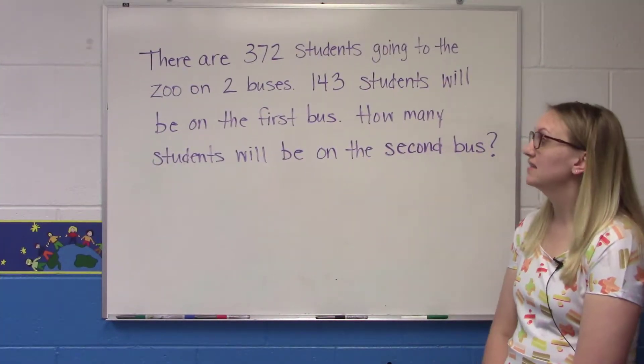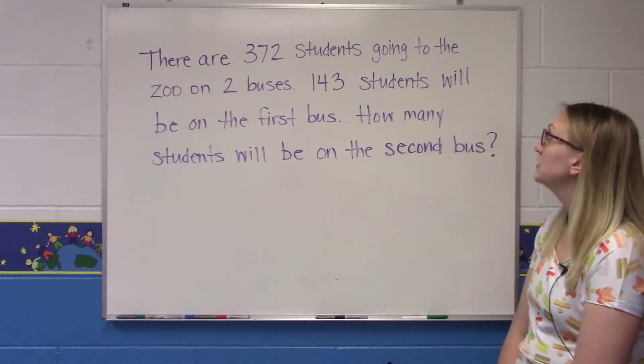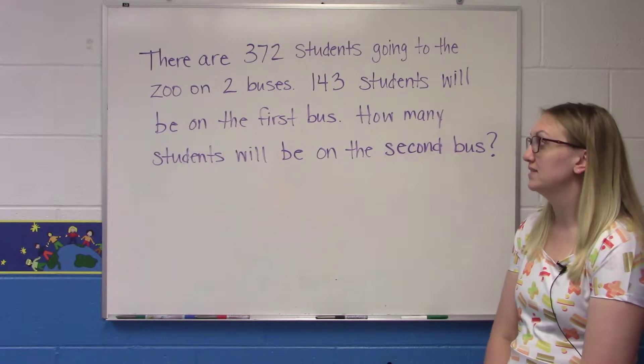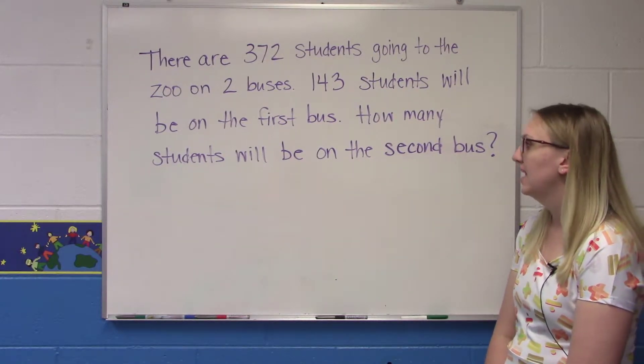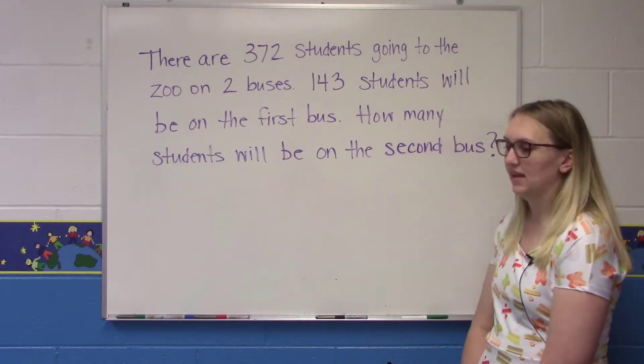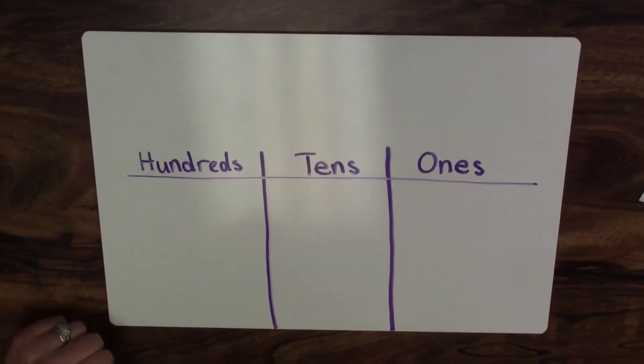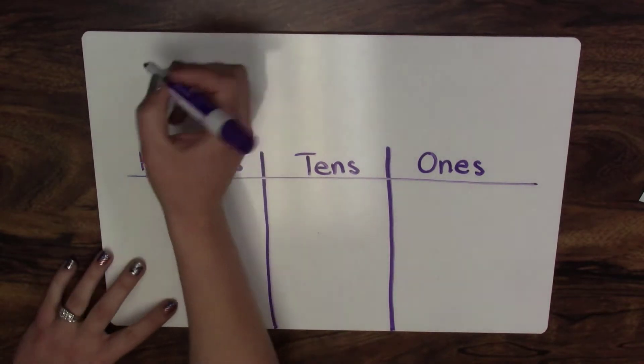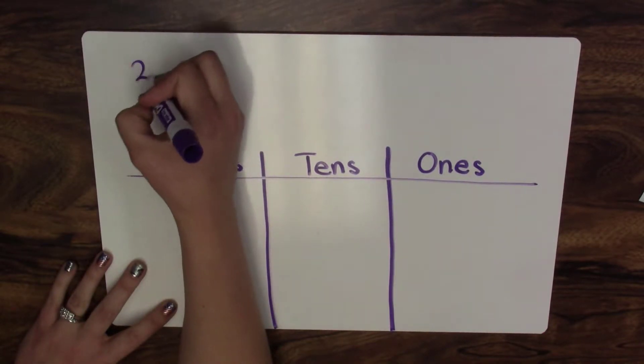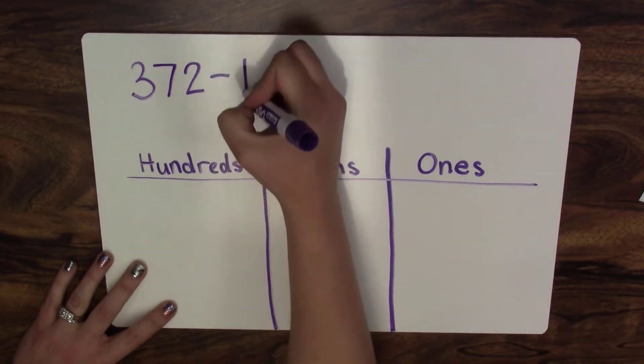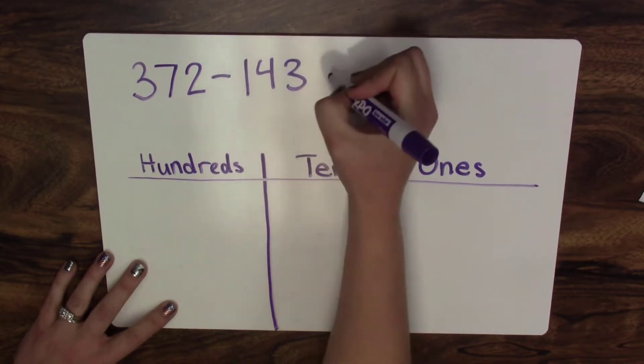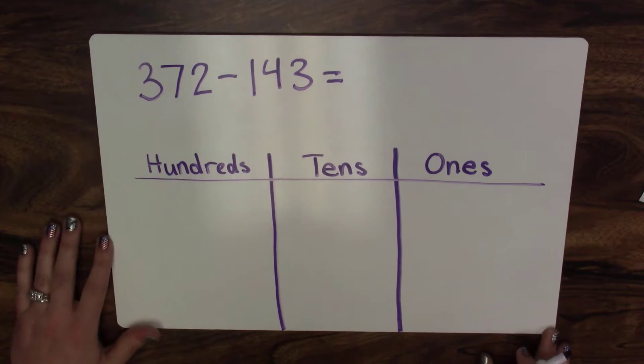Today's problem is there are 372 students going to the zoo on two buses. 143 students will be on the first bus. How many students will be on the second bus? So now I know I need to find the difference. I'm going to write my equation 372 minus 143 equals, and this is what I'll be solving for.